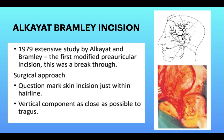The Al-Kayat Bramley incision is a question-mark shaped incision, which is a modification of the pre-auricular incision, with the superior extension going into the hairline. The vertical component is made as close to the tragus as possible. This incision was designed taking into consideration the branching of the superficial temporal artery and the facial nerve — the nerve to the muscles of facial expression. The question-mark shape lies inside the hairline for aesthetic purposes.